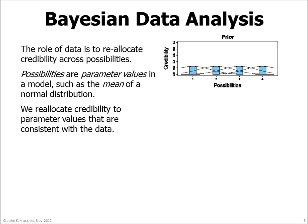For example, suppose we have some data that we want to describe with a normal distribution. For purposes of illustration, suppose we entertain four candidate values for the mean of the distribution, namely values of 1, 2, 3, and 4. This graph plots the prior credibilities of the four means as heights of the four blue bars. There are normal distributions superimposed on the four bars to suggest the data distributions corresponding to each mean. In this example, we suppose that the four values of the mean are equally credible a priori, and therefore the bars have equal heights.